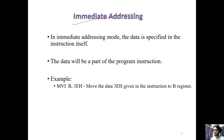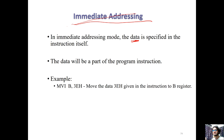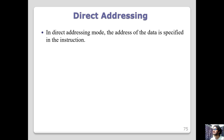Let's look at immediate addressing first. In immediate addressing mode, the data is directly given as part of the instruction itself — the data is specified directly in the instruction. For example, MVIB 3EH — this is a move immediate instruction where 3EH is the immediate data.